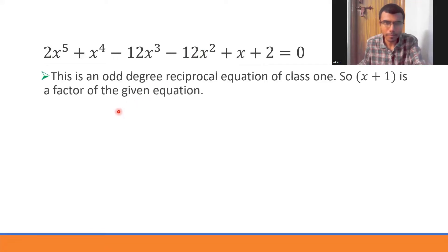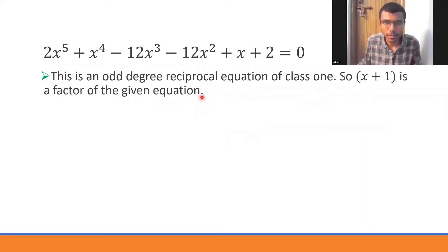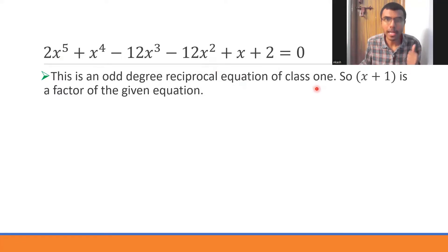This is an odd-degree reciprocal equation of class 1 — the constant is positive, which defines class 1. Therefore, x+1 is a factor of the given equation. For those not writing a board exam, you can directly verify: compute f(-1) and if it equals 0, conclude that x+1 is a factor. We'll now divide this polynomial by x+1.